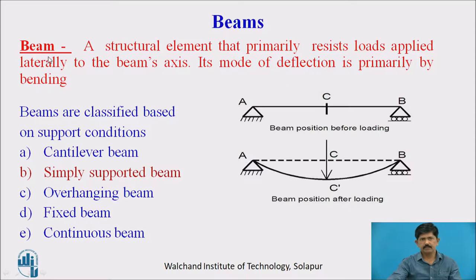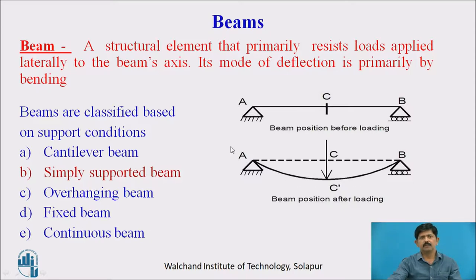What is a beam? A beam is a structural element that primarily resists loads applied laterally to the beam's axis. Its mode of deflection is primarily by bending. This is the initial position of the beam and when load is applied, it is deflected by bending. Beams are classified according to support conditions: cantilever beam, simply supported beam, overhanging beam, fixed beam, and continuous beam. We are focusing on the simply supported beam.